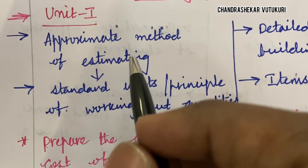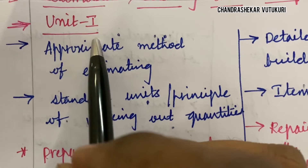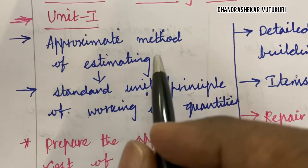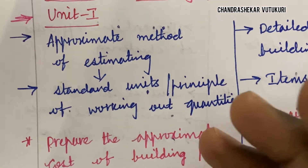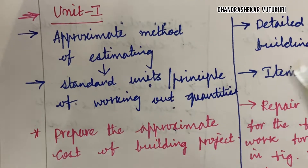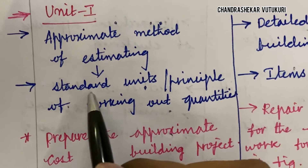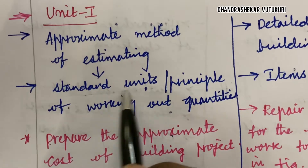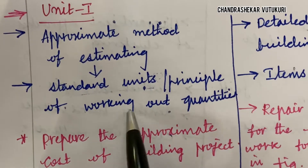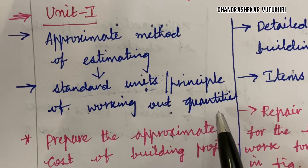I have come up with certain questions and the question paper pattern is all about problems only. Dear students can expect 90% of the problems in the long questions. The first and foremost unit is all about the approximate method of estimating, standard units, and the principle of working out quantities. You will be getting a three-mark question on this principle.